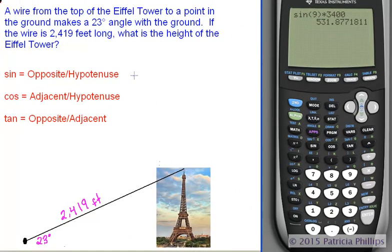Let's do another one. A wire from the top of the Eiffel Tower to a point on the ground makes a 23 degree angle with the ground. If the wire is 2,419 feet long, what is the height of the Eiffel Tower?